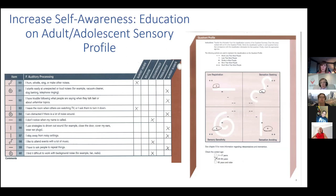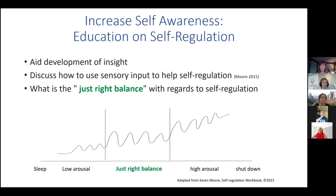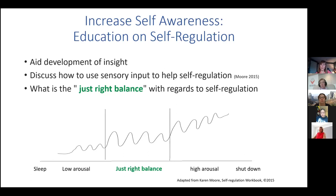Her current environment doesn't provide the necessary intensity or variability in sensory information to sustain her attention and perform daily tasks, which creates cognitive interference with daily activities. We go back to increasing self-awareness and education on self-regulation — spending time talking about what the just-right balance really looks like, how to recognize when we're getting into that high arousal or shutdown mode where everything shuts down, and how to recognize a lower arousal state where we need to do something to perk ourselves up.